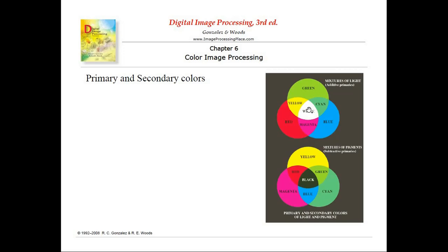Now, in the same diagram, when any primary color — let us say red — combines with its opposite secondary color, it again produces white. The secondary colors of light are yellow, cyan, and magenta. Red's opposite secondary color is cyan. So when red combines with cyan, it produces white.